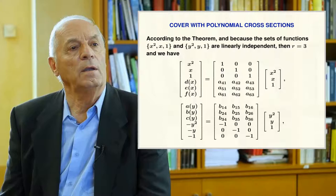To solve this equation, we apply the previous theorem. First, we write in column form the six functions of x and the six functions of y with the corresponding signs. We must analyze the set of six f functions looking for linearly independent functions. The functions 1, x, and x-squared are linearly independent, and the other three unknown functions can be generated by these first three. Thus, a minimum of three functions must appear in the column matrix. The same applies for the g functions, where minus y-squared, minus y, and minus 1 are linearly independent.